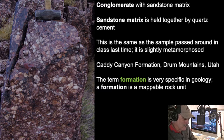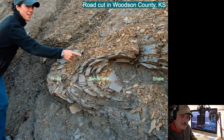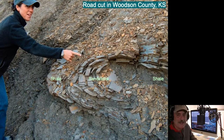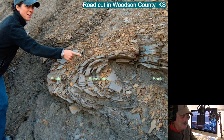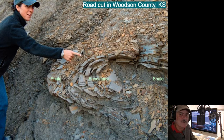Here's an example of interbedded shale and sandstone. The sandstone has actually been folded — that happened at pretty close to the time of deposition, shortly after the sandstone was deposited. You can squeeze the clays, but you can't squeeze the sandstone so much; you can bend them but you can't squeeze them. This is from Woodson County in Kansas, a road cut close to Rose Dome.